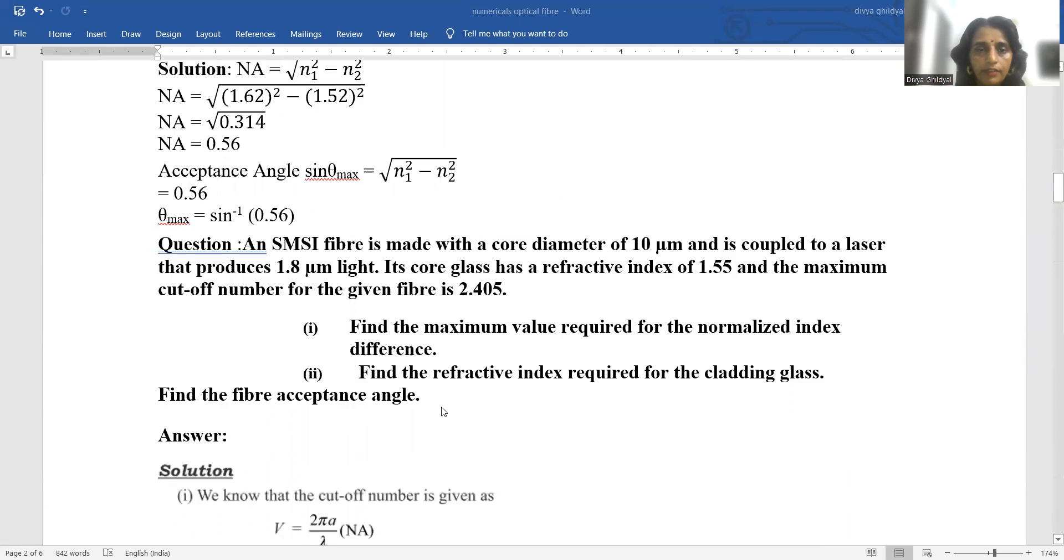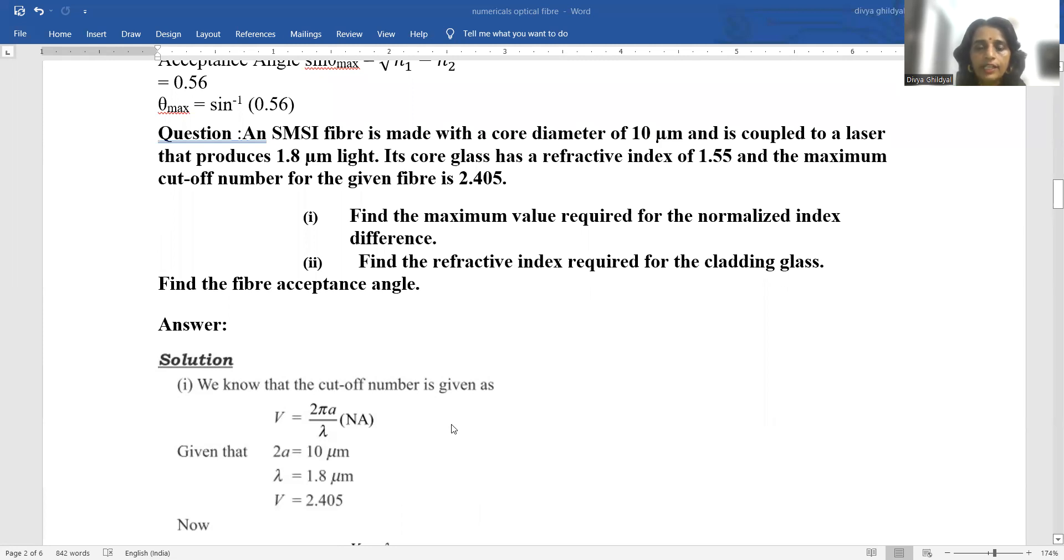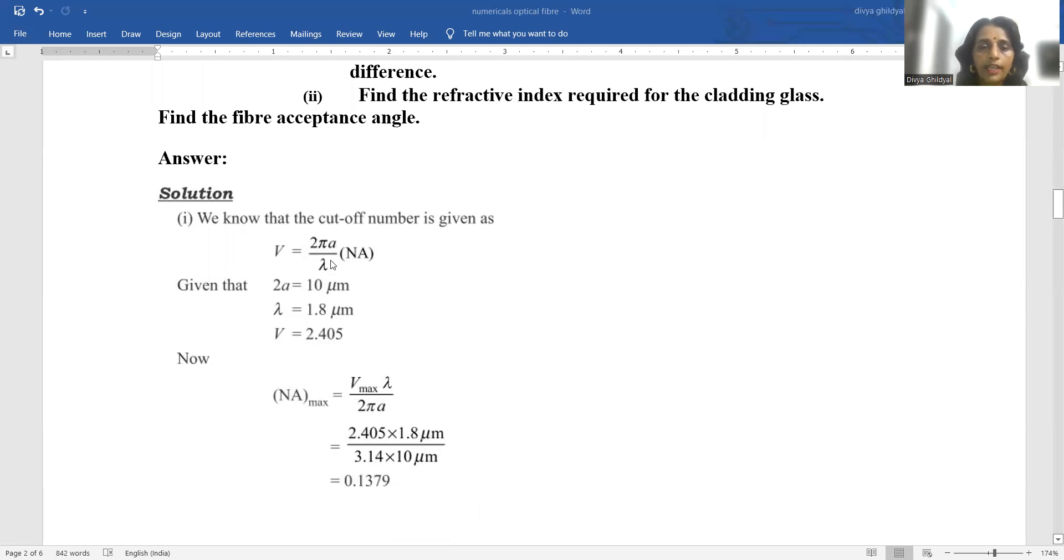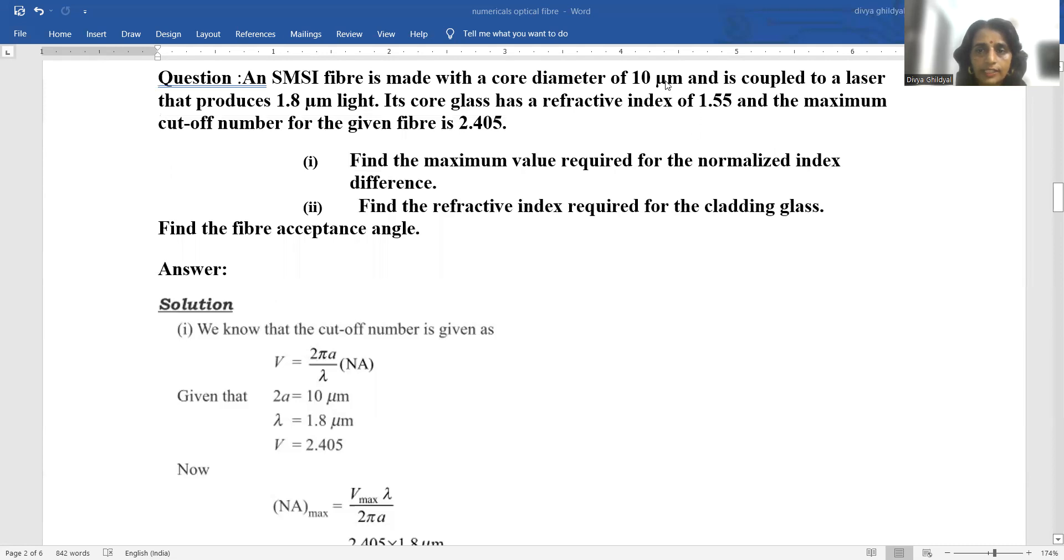An SMI fiber is made with a core diameter 10 micrometer and is coupled to a laser that produces 1.8 micrometer light. Its core glass has refractive index 1.55 and the maximum cutoff number for the given fiber is 2.405. Find the maximum value required for the normalized index difference, find the refractive index required for the cladding glass, and find the fibers acceptance angle. Cutoff number is given by 2 pi a upon lambda into numerical aperture.